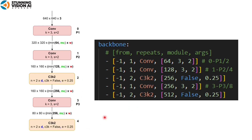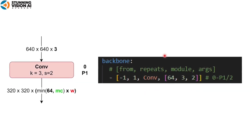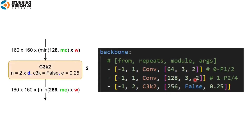I will now explain the blocks or modules written in the architecture file. In general, the format consists of: from, repeats, module, and args. 'From' refers to the module or block that is connected; minus 1 indicates this block is connected to the previous block. 'Repeats' defines the N parameter in the C3K2 and C2PSA blocks. 'Module' refers to the name of the block. In the Conv block, there are 3 arguments: base output channel, kernel size, and stride size. In the C3K2 block, repeats define the N parameter, which determines the number of bottleneck blocks. To determine N, repeats are multiplied by the depth multiple. There are 3 arguments: base output channel, an argument for defining the use of the C3K block, and the expansion value E, which controls the capacity of the bottleneck block. This block is newly introduced in YOLO 11.